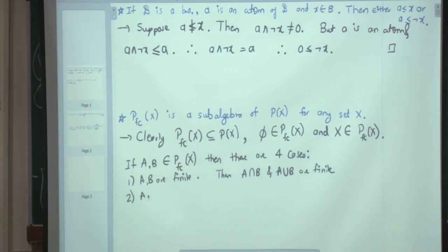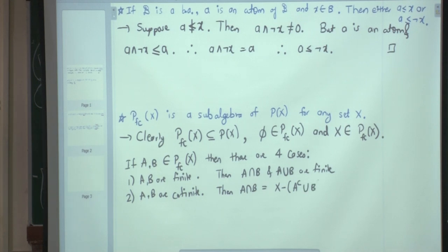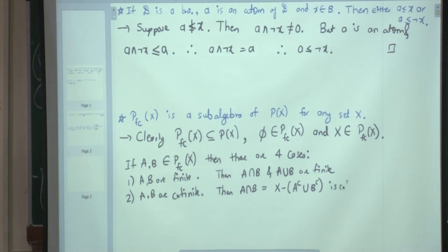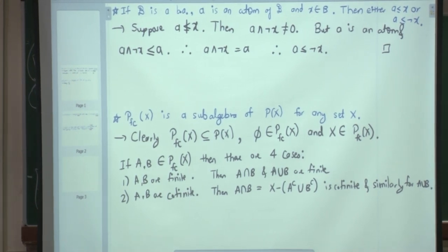Similarly, if A and B are both co-finite, then A ∩ B = complement of (A^c ∪ B^c). But A^c and B^c are finite, so their union is finite, and therefore A ∩ B is co-finite. Similarly for A ∪ B. We are using De Morgan here — please make sure you cite this result.